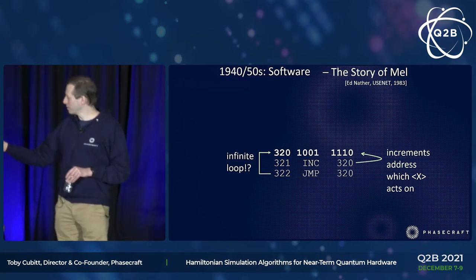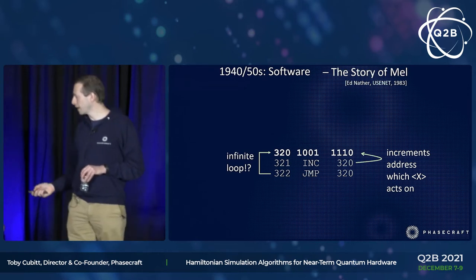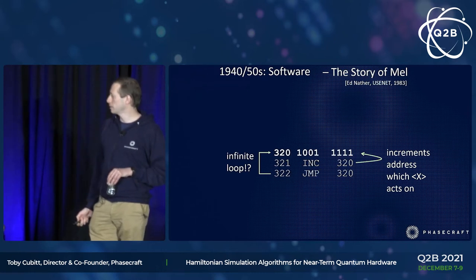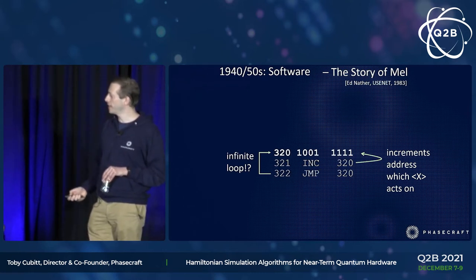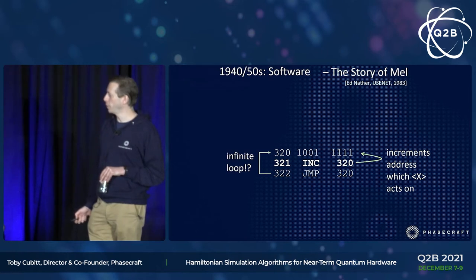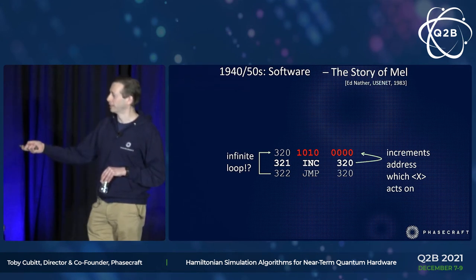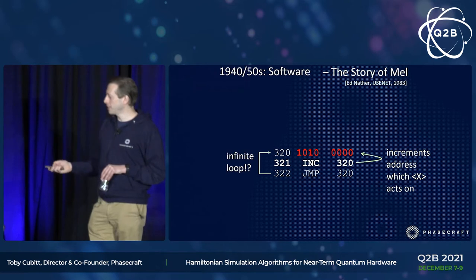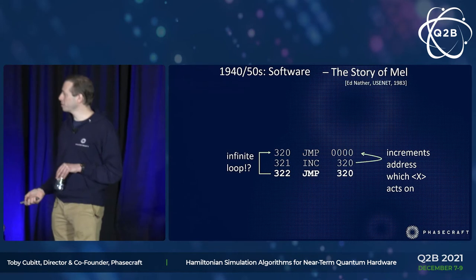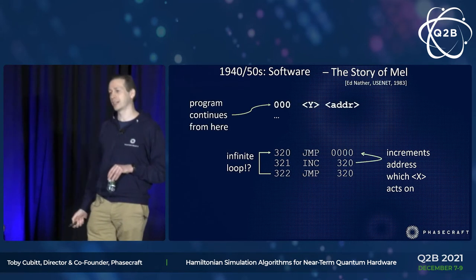The thing that mystified Ed Nather is how on earth this program ever exited this loop, because there's no condition in the jump — it just loops around and around and never exits. There's no checking on a loop variable. And yet when he ran it, it would go through this loop, do its stuff, and exit. What he finally realized is that when it gets to the end of the data, the way it was located in memory means the increment carries over into incrementing the instruction itself. And it just so happens that in this architecture, that instruction is a jump — so the program jumps to memory address zero, gets out of the loop, and carries on.